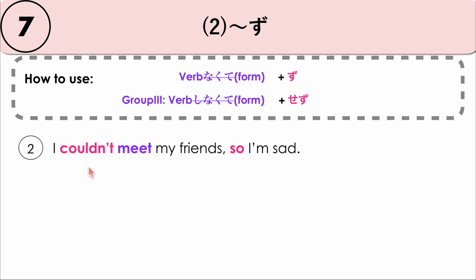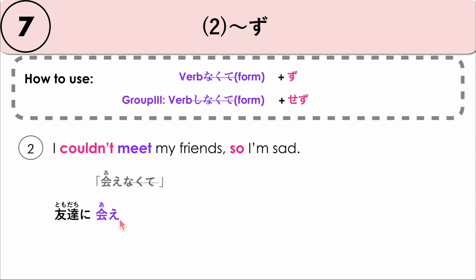Another example: I couldn't meet my friends, so I'm sad. Tomodachi ni — our verb is aenakute, couldn't meet — so we say aezu. Sabishii desu. Tomodachi ni aezu, sabishii desu. Because I couldn't meet my friends, I'm sad.